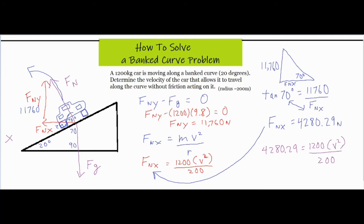It looks like we have everything we need here. I went ahead and used tangent of 70 degrees and did the opposite over the adjacent side. I did a little cross multiply here, so 11,760 divided by tangent of 70 degrees gives me 4,280.29 newtons for my horizontal component which is the side we're looking for. I took that number, slid it into this formula and set that equal to mv squared over r.